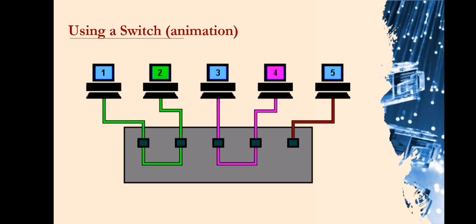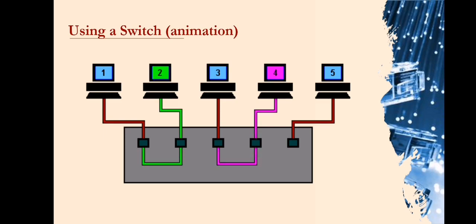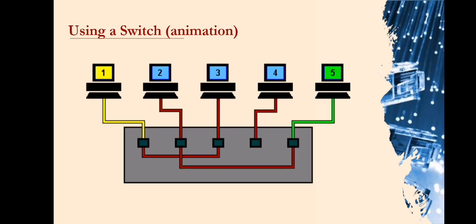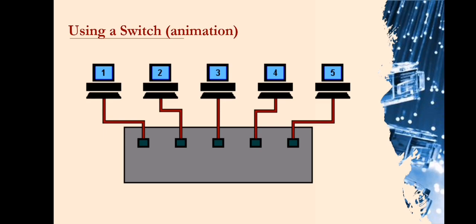To overcome the problem of collision and other effects on network speed, we now use switches. With a switch, machines can transmit simultaneously — in this case, machines 1 and 5 first, and then 2 and 4. As you can see, the switch reads the destination addresses and switches the signals directly to the recipient without broadcasting to all machines on the network. This point-to-point switching eliminates the problems associated with collision and considerably improves network performance.